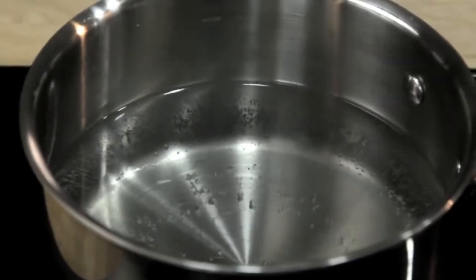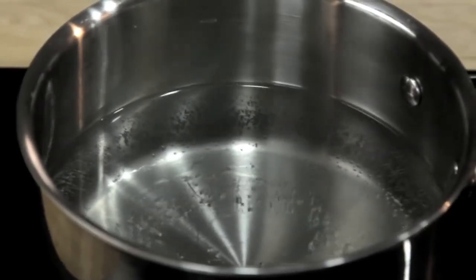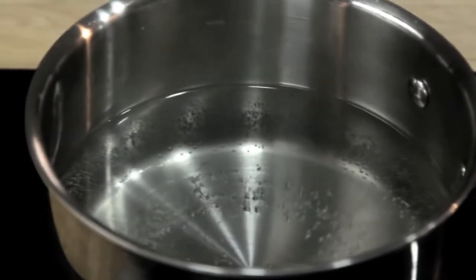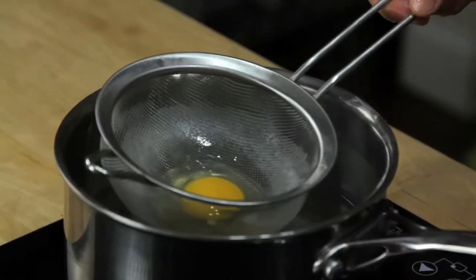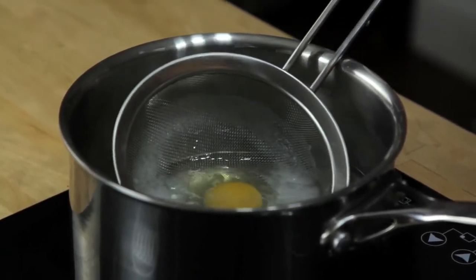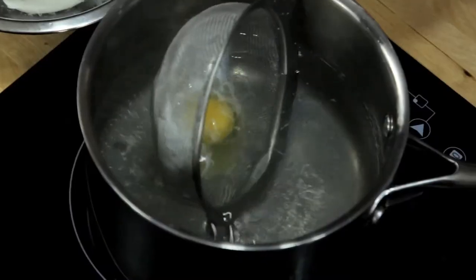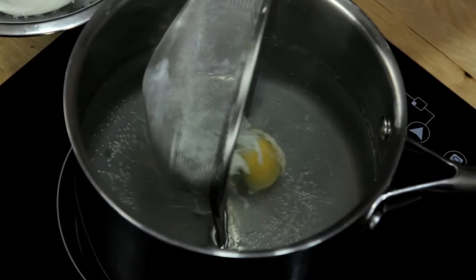What I've got here is a pot of water at 180 degrees Fahrenheit, which is just about the temperature that the water is quivering but not quite simmering yet. All I'm going to do is gently lower the strainer with the egg into the water, move it back and forth a little bit to make sure the egg isn't stuck, and then carefully roll the egg out.